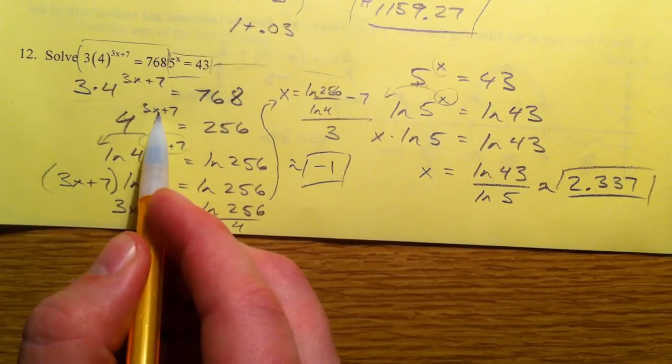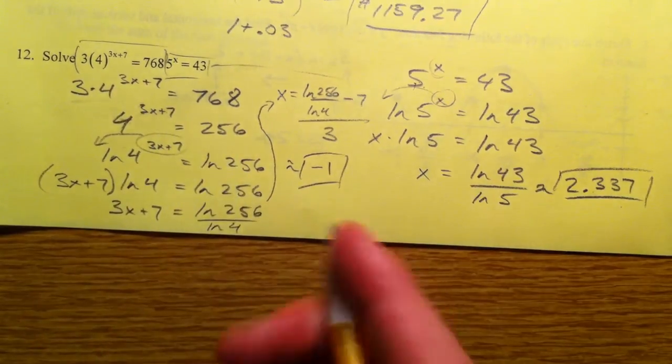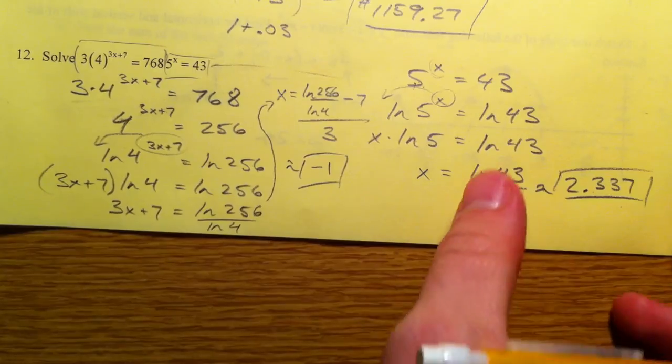3 times negative 1, negative 3 plus 7 is 4. 4^4 is 256, and that's why that works out.